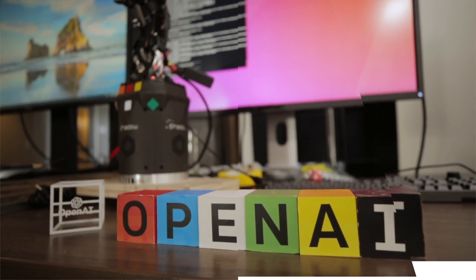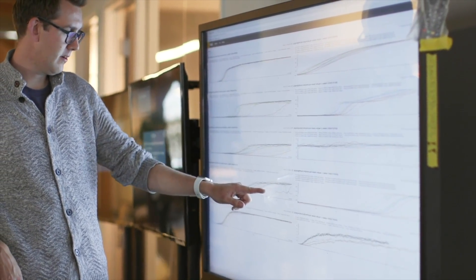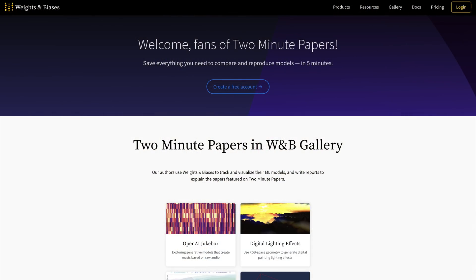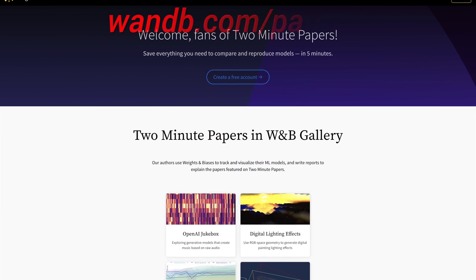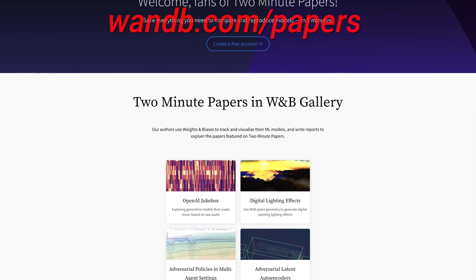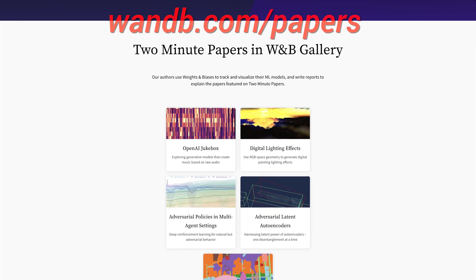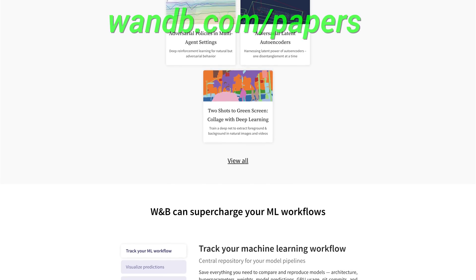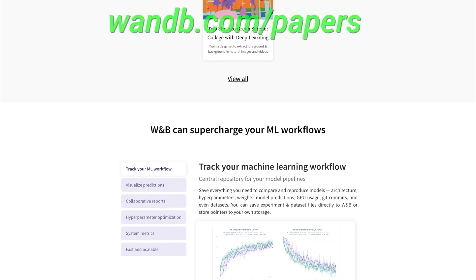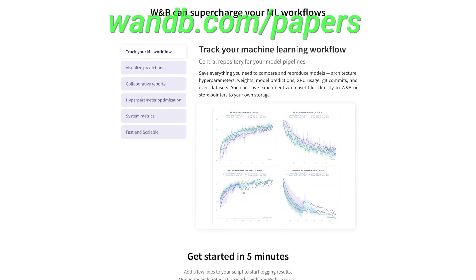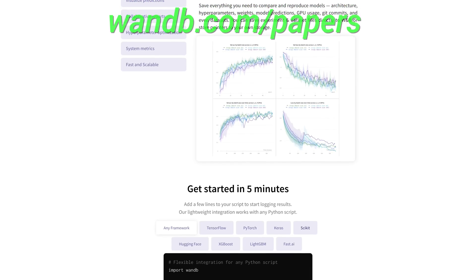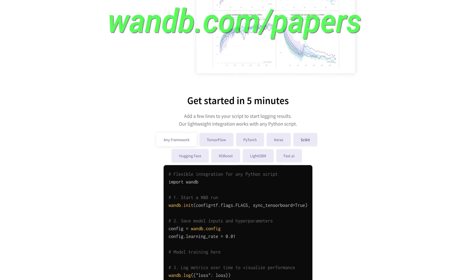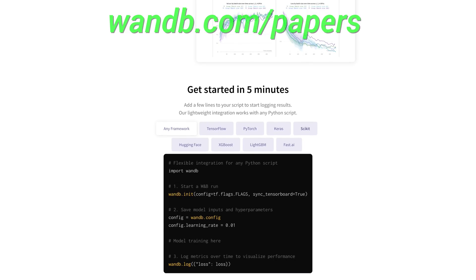It is used by more than 200 companies and research institutions including OpenAI, Toyota Research, GitHub, and more. And get this, Weights and Biases is free for all individuals, academics, and open source projects. Make sure to visit them through wnba.com slash papers or just click the link in the video description and you can get a free demo today. Our thanks to Weights and Biases for their longstanding support and for helping us make better videos for you. Thanks for watching and for your generous support, and I'll see you next time!